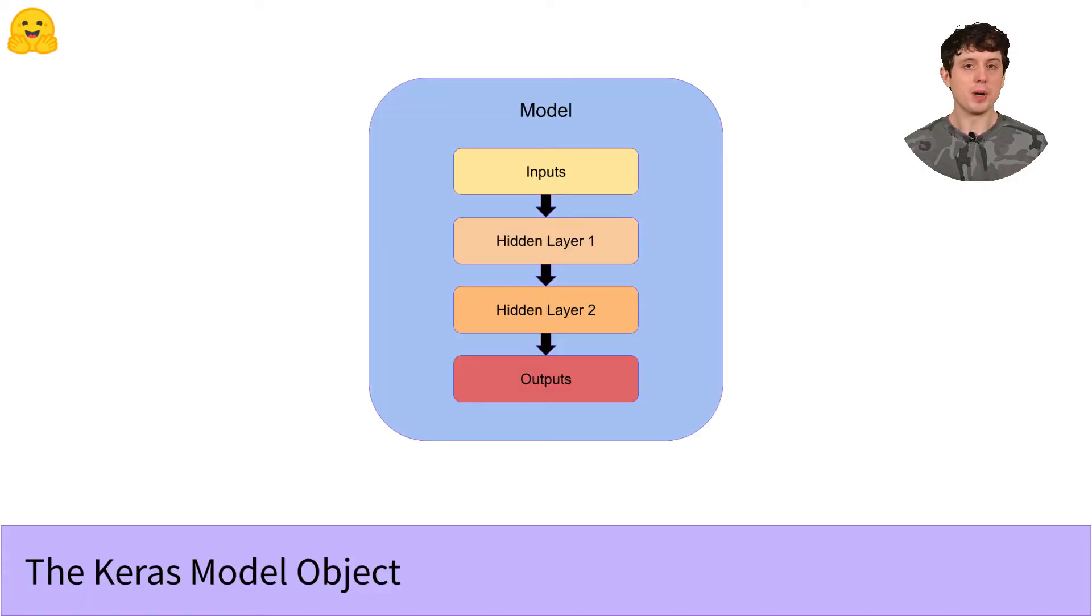Your model basically contains your entire network. It contains the layers and the weights for those layers, and also tells the model what to do with them. It defines the whole path all the way from your inputs to your outputs.